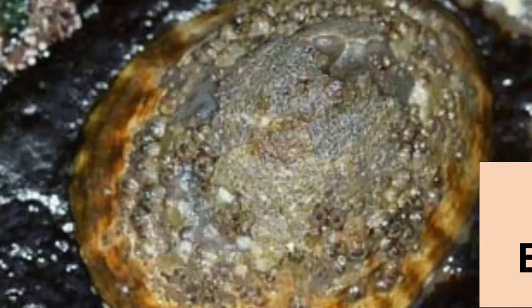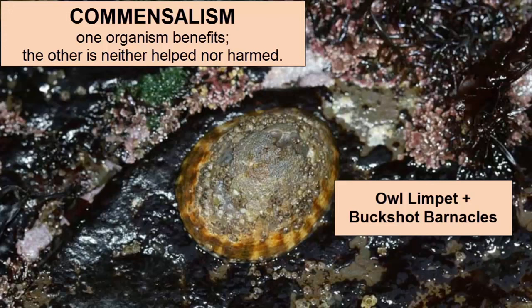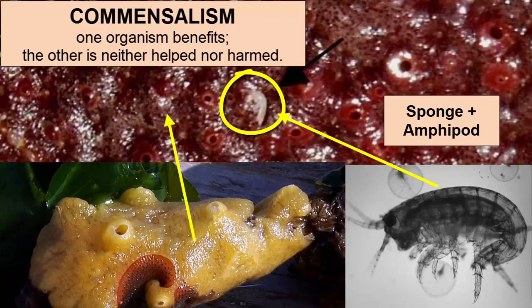Barnacles get their food by filtering it out of the water. They remain fixed in location and so are dependent on the abundance of planktonic organisms living in the water around them. Another example of Commensalism is shown in this picture: this small amphipod is living attached to the outside of a sponge. Sponges filter huge quantities of water through their pores every day, and this amphipod sits outside one of those holes and feeds itself off the organisms in the currents.